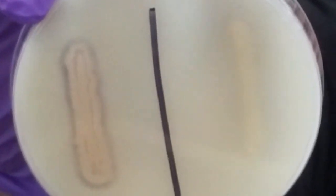If I hand this to Keith so he can get a close-up, you can see that there is a clearing around Bacillus subtilis, which is positive, and no clearing around Staph aureus, which is negative.